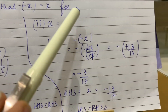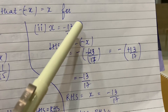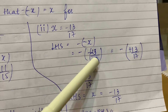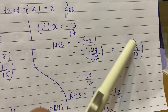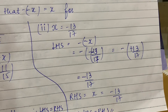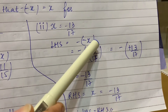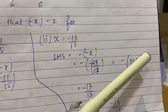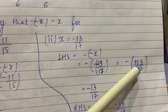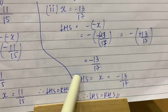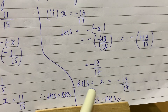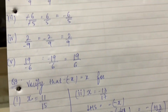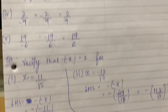Similarly the second sum: x is equal to minus 13 upon 17. LHS is minus minus x. So minus minus of minus 13 upon 17. There are two minus signs already in the expression, and x itself has a minus sign, making three minus signs. Minus minus makes plus, and that plus with the remaining minus makes minus. So after simplification, answer is minus 13 upon 17. RHS is x, which equals minus 13 upon 17. Hence LHS equals RHS. Now we will end this lecture.